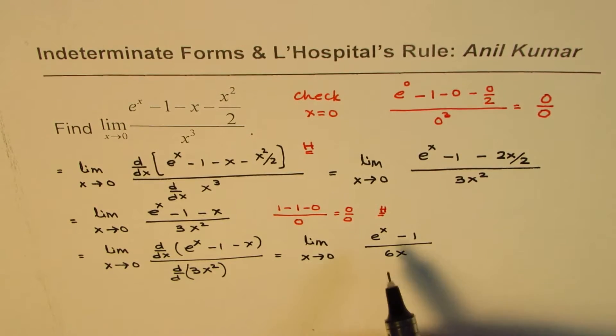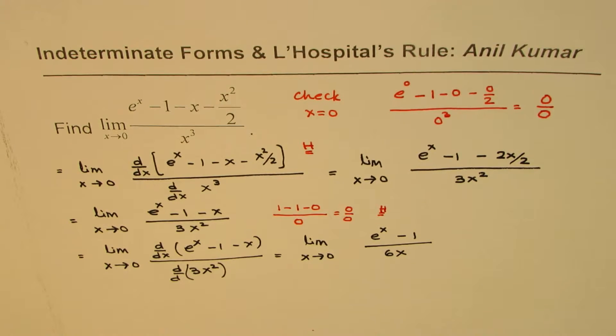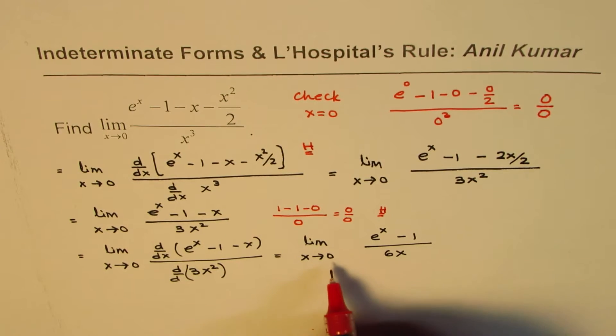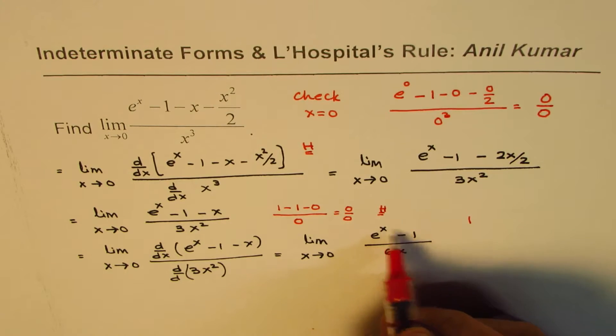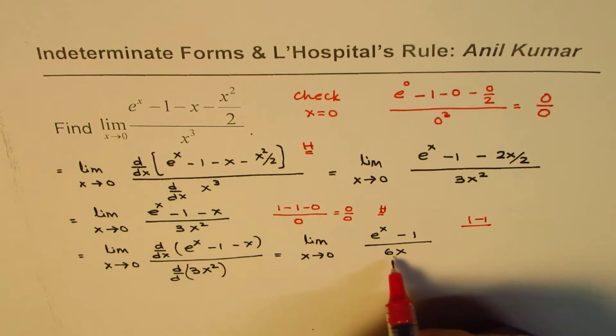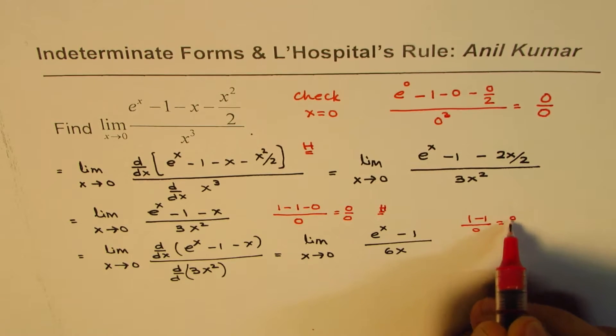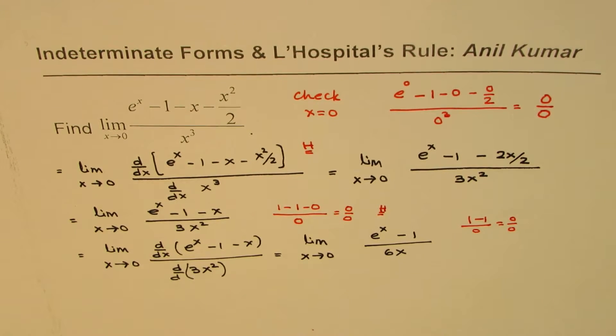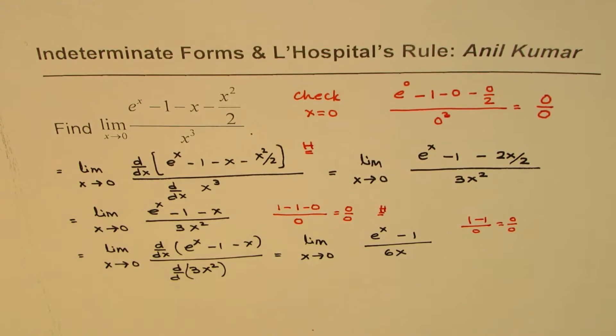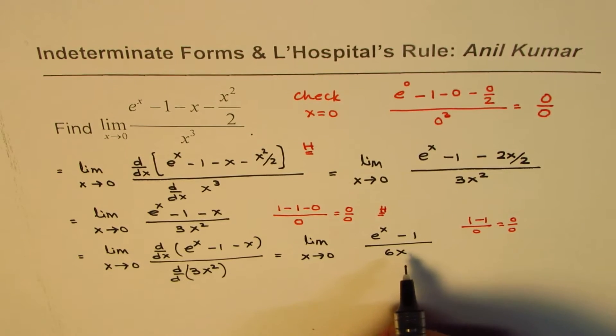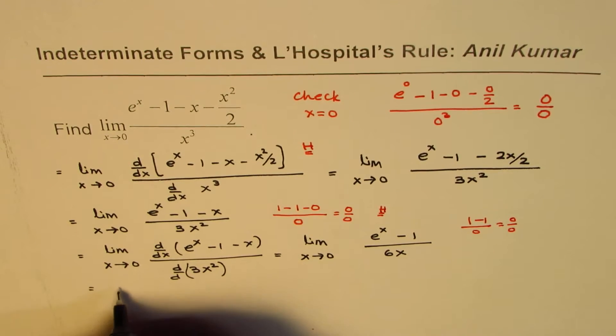Now, remember, we can continue applying this rule if we get a stage which is indeterminate form. So it is good to check at every step. Here, if I substitute 0, what do I get? I get 1, anything to the power of 0, minus 1 over 6 times 0 is 0. So it is 0 over 0. It simply means that we can again apply L'Hospital's rule. So let's again apply the rule.